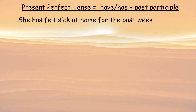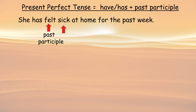Present perfect tense: have or has plus the past participle. She has felt sick at home for the past week. The past participle is 'felt.' What's the question? Who has felt sick at home for the past week? How has she felt at home for the past week? Where has she felt sick for the past week?